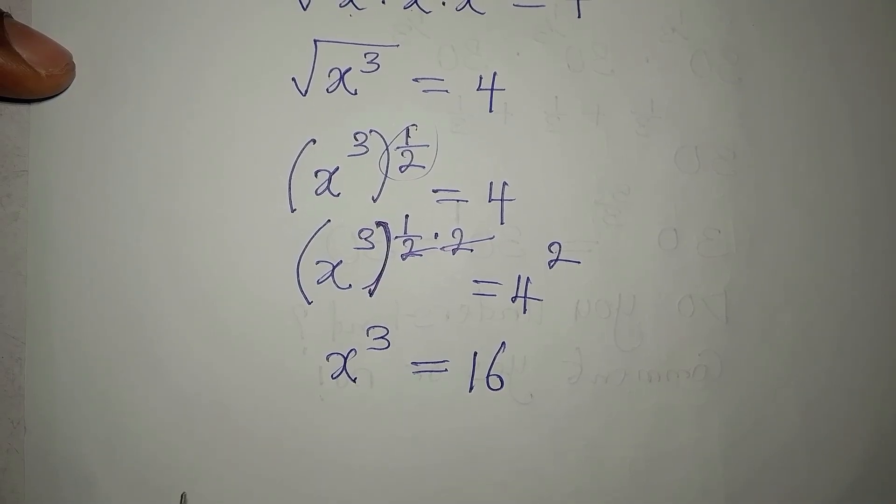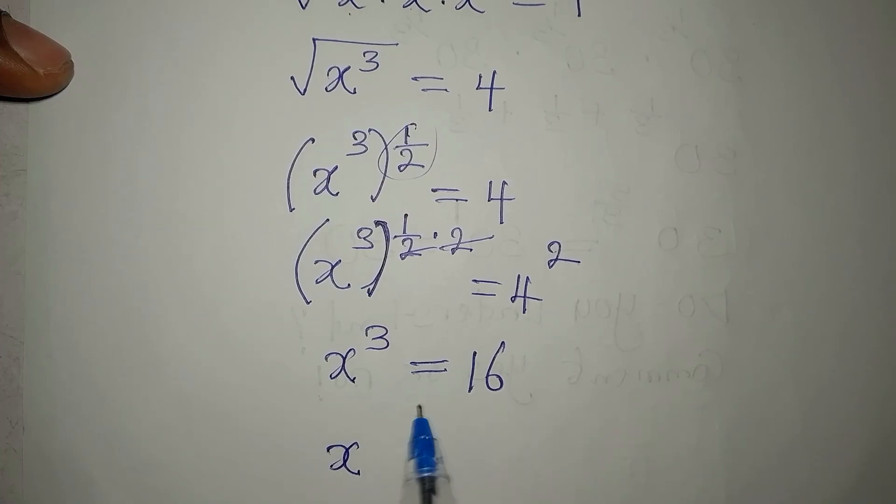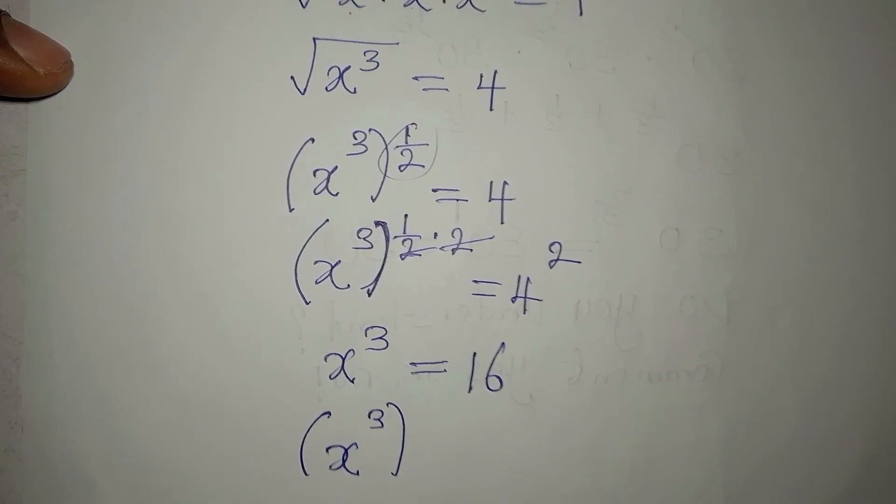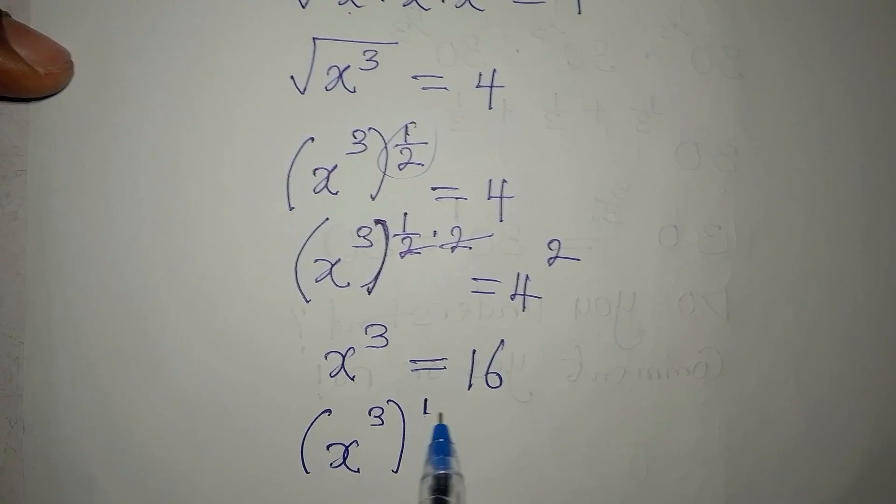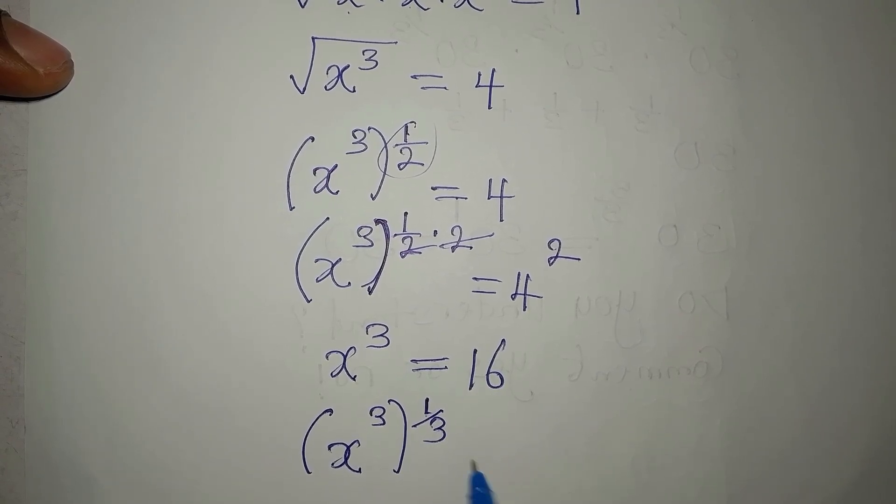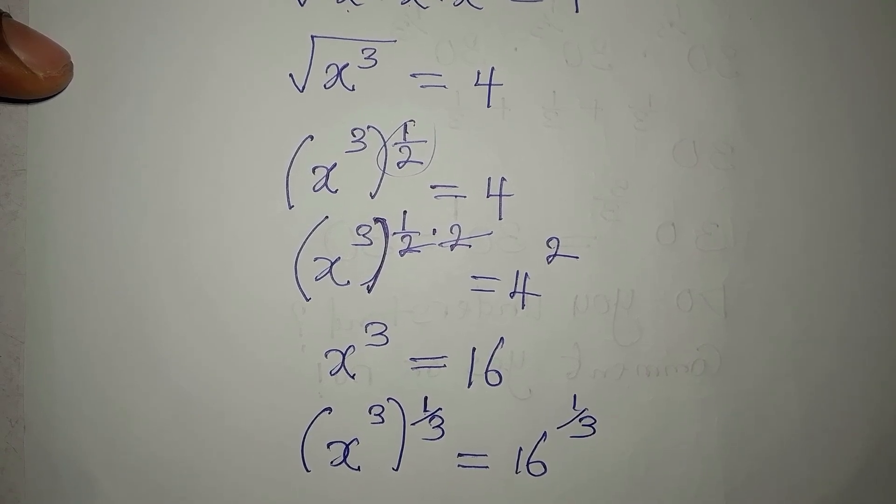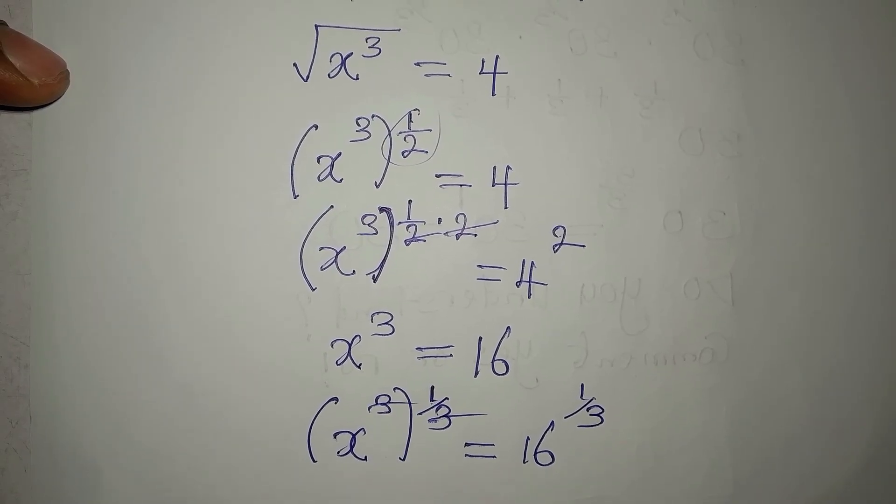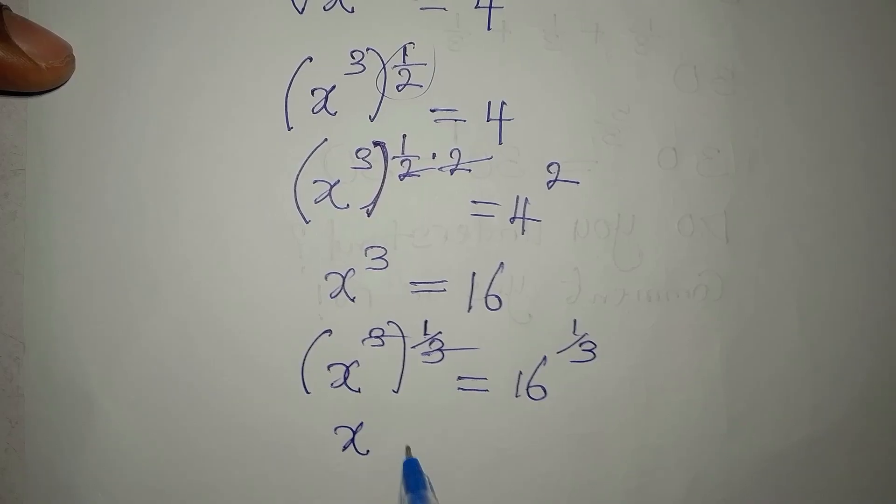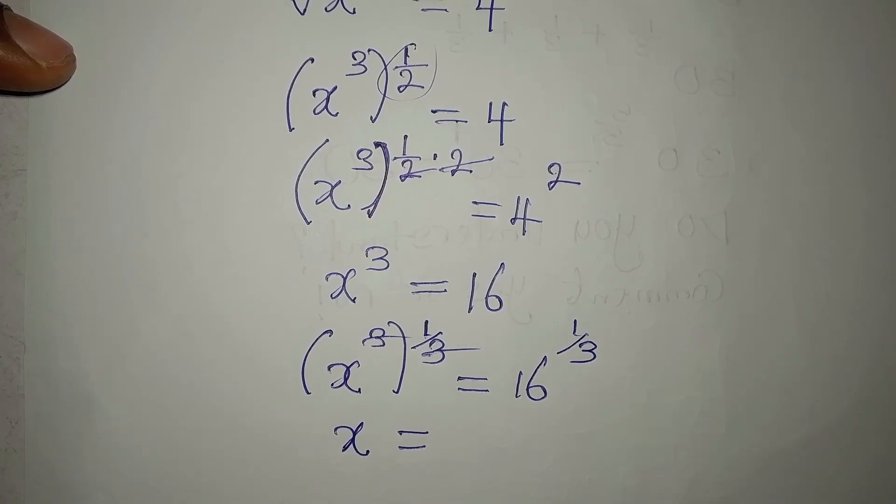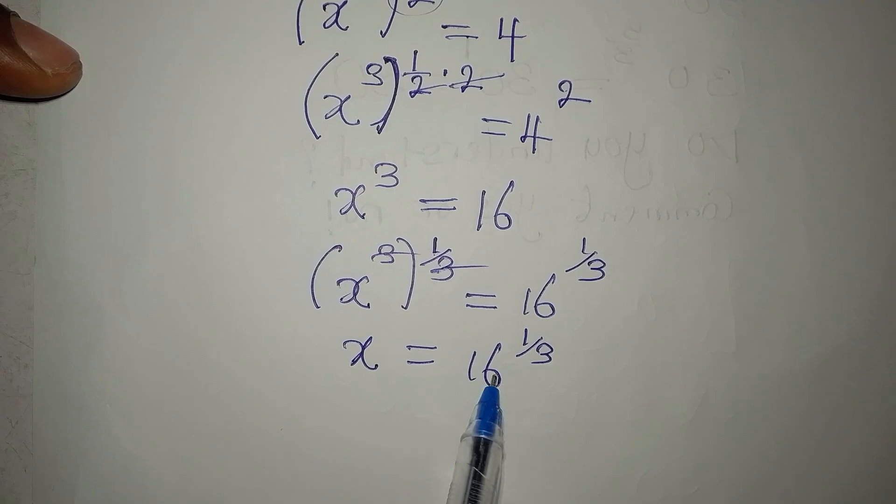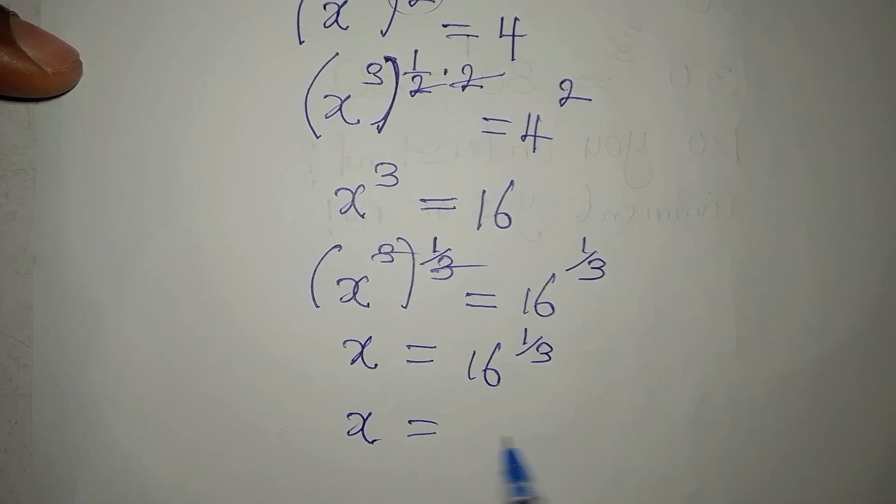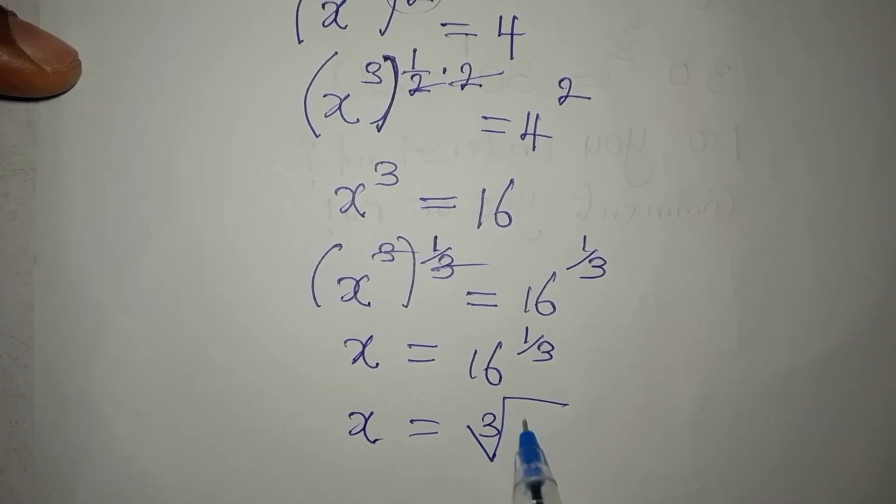Now, how do we remove this 3? We remove the 3 by taking the cube root of x to the power of 3. So here, I'm going to have 1 over 3. On the other hand, I will now have 16 to the power of 1 over 3. So that this will go with this one. And then x is 16 to the power of 1 over 3, which is what we have been looking for. I believe that you know that your x is now the same thing as the cube root of 16.